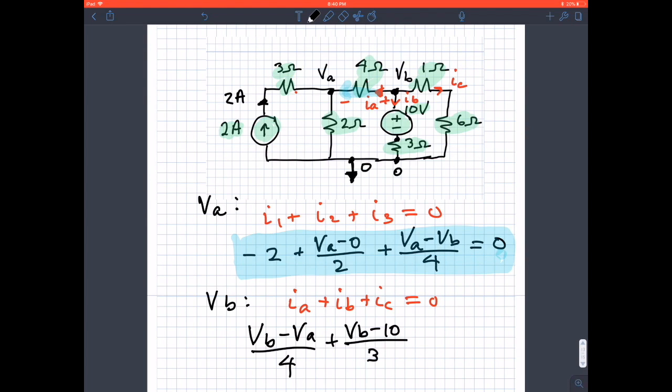Think about that again. Here's VB. I have a drop, so this point right here is VB minus 10. The voltage across the resistor is VB minus 10. One way to do it is VB minus 10 minus zero divided by three.